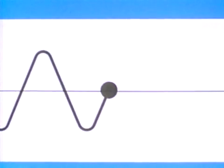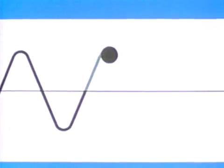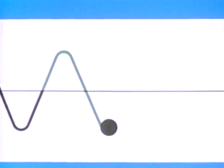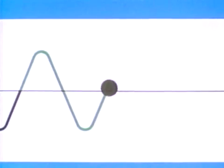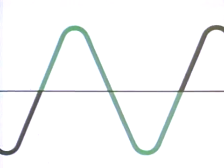If we put in an axis, we can make some definitions. The movement of our molecule from the axis to as far above the axis as it goes, to as far below the axis as it goes, and then back to the axis represents one vibration, or cycle. So this is one cycle.